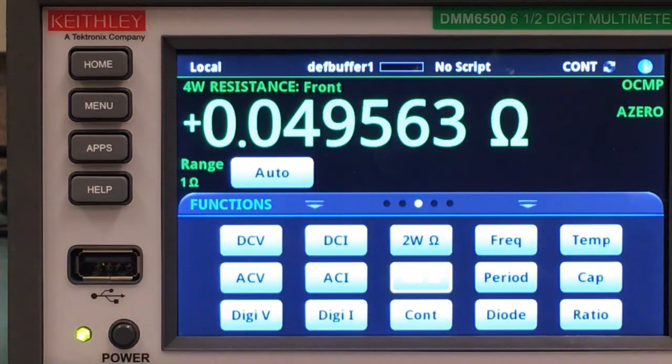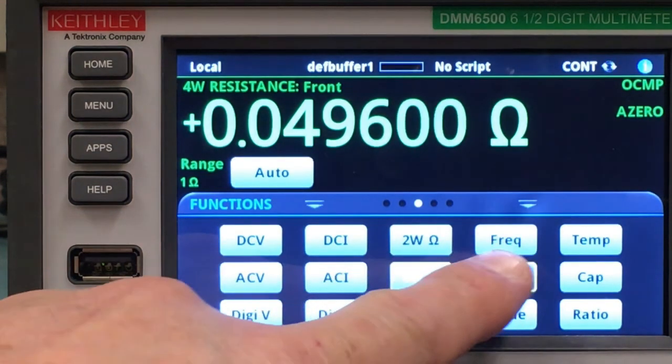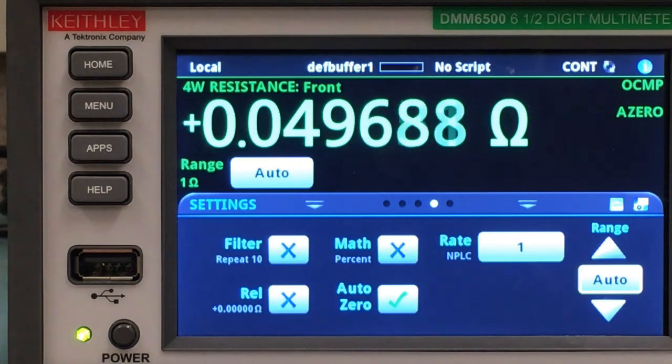And you can see that we are very near the target value of 50 milliohms. Let's see if we can make that a little more eye-pleasing by applying a filter.